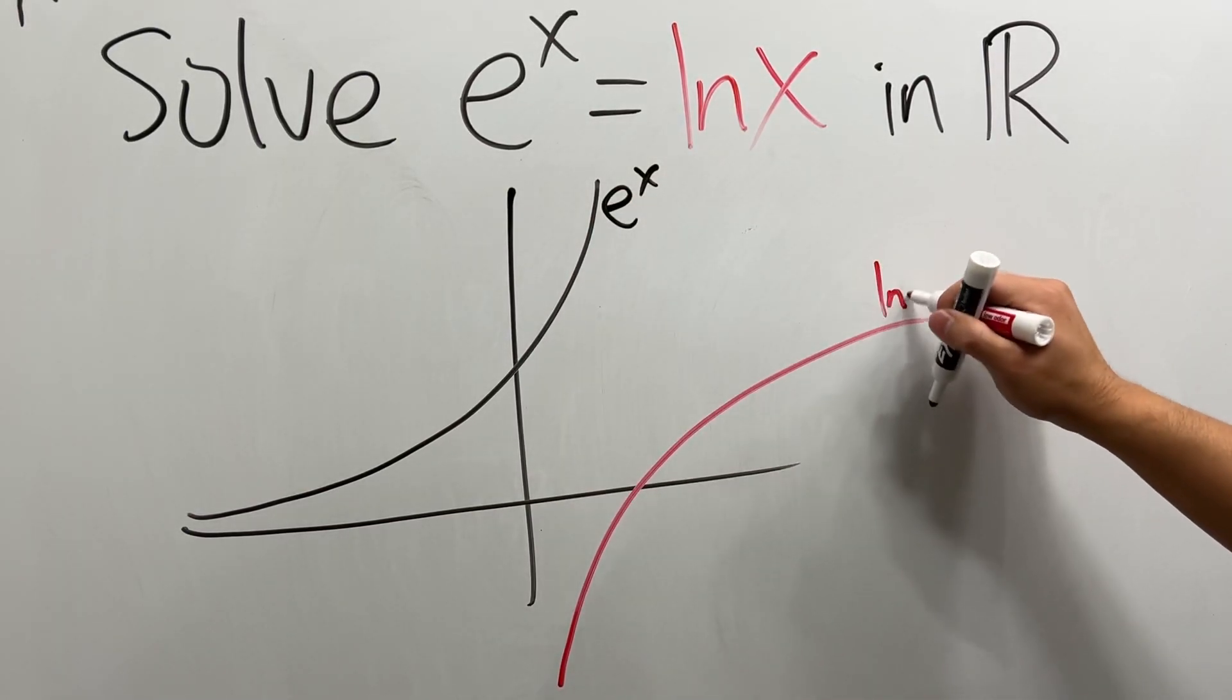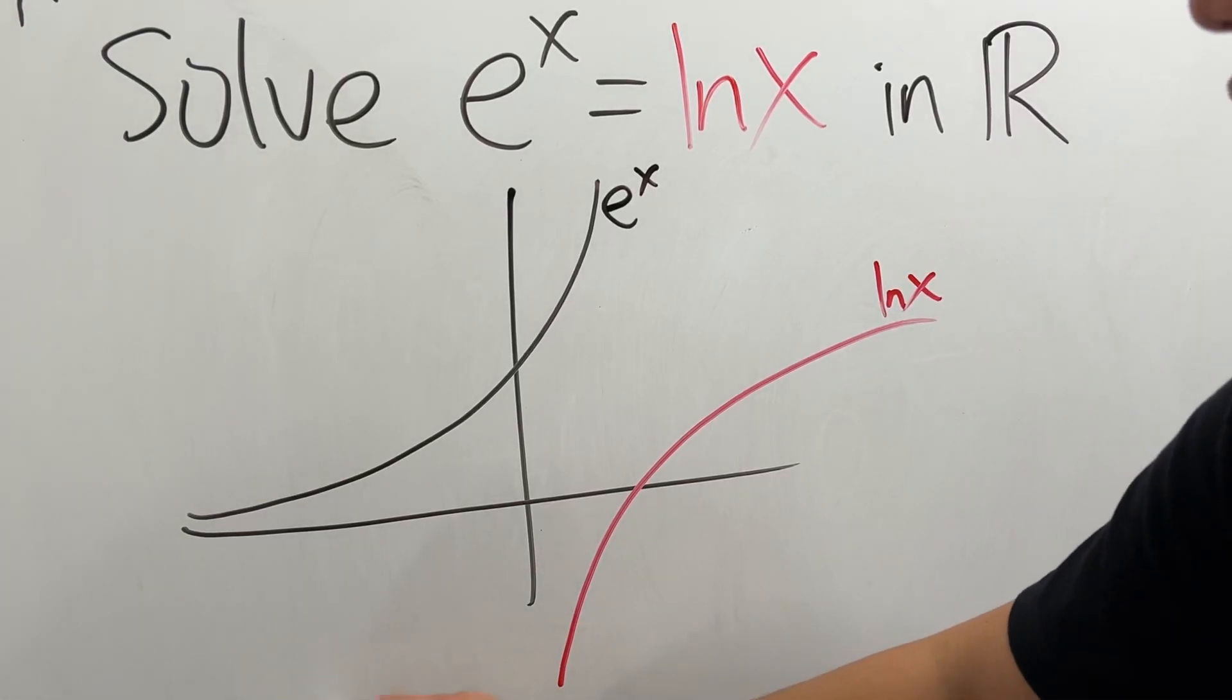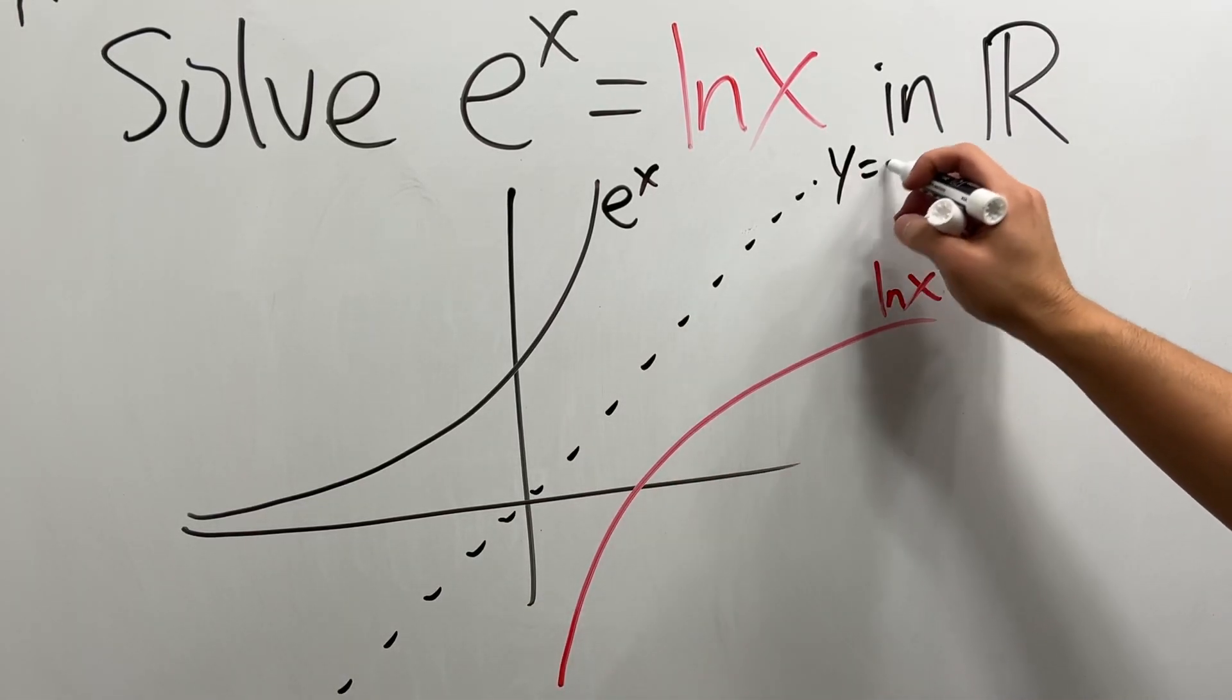This is e to the x, this is ln x, and then it's actually a nice reflection about the line, y equals x.